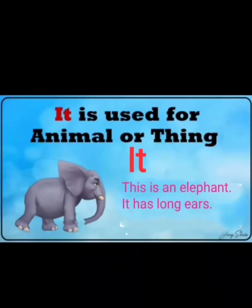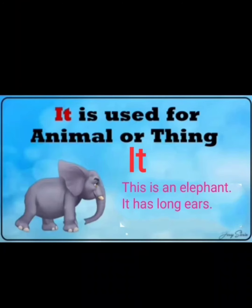'It' is used for an animal or a thing. When we talk about an animal or a thing, we will use 'it'. For example, this is an elephant. It has long ears. So we used 'it' for the elephant. 'It' is used for animals and things.